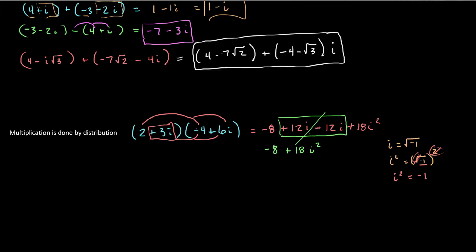So what I really have here in this negative 8 plus 18i squared is I really have negative 8 plus 18 times negative 1, which is negative 8 minus 18, which is just negative 26. So all of this stuff, 2 plus 3i times negative 4 plus 6i, all boil down to negative 26.